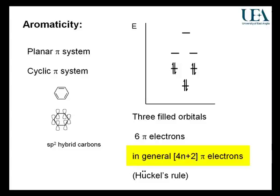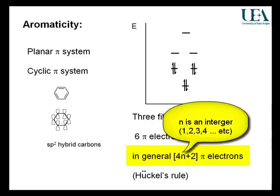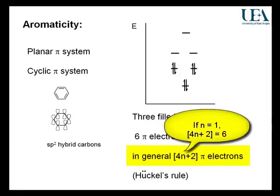is a simple way of counting in fours. The rule is based on the fact that this little n here is a whole number. Think of a number—one. That's the simplest of the integers. Four times one is four, that's 4n, plus two is six.